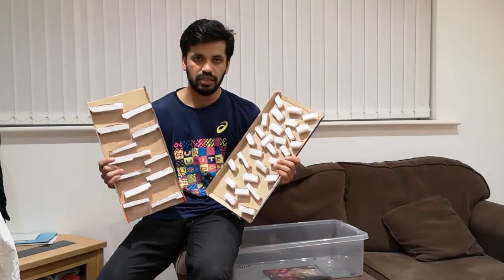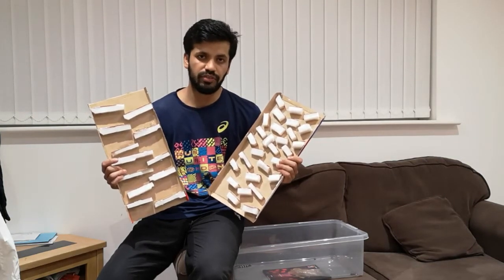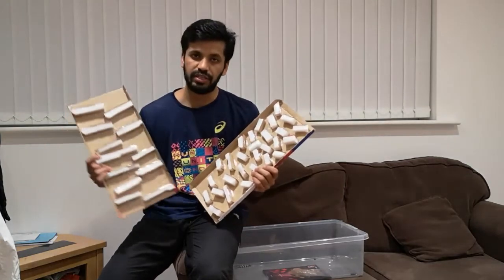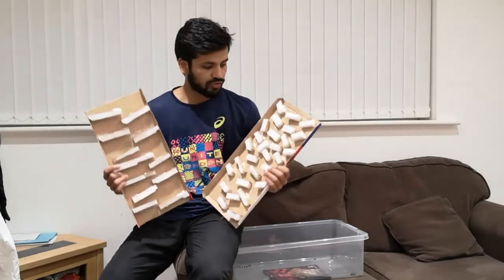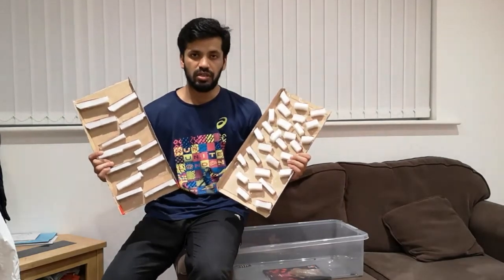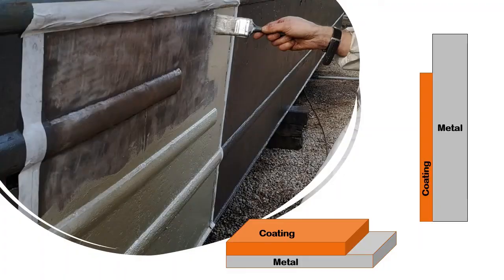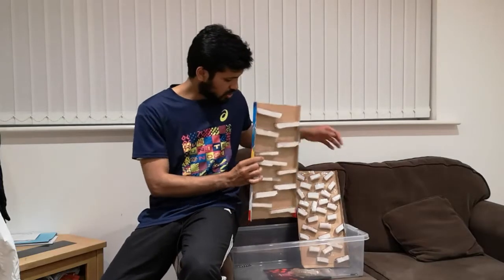In this video I will be demonstrating the difference between conventional pigments and graphene pigments. What we are seeing here are very simplistic models showing the cross-sectional view of a coating on a metal surface.